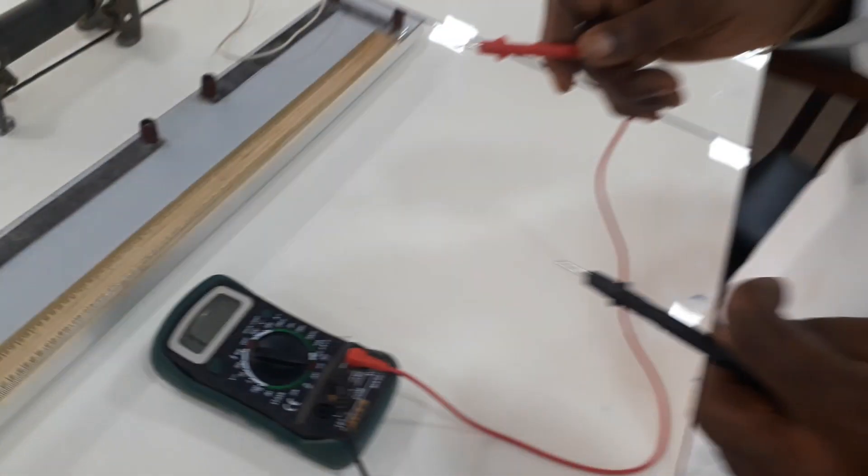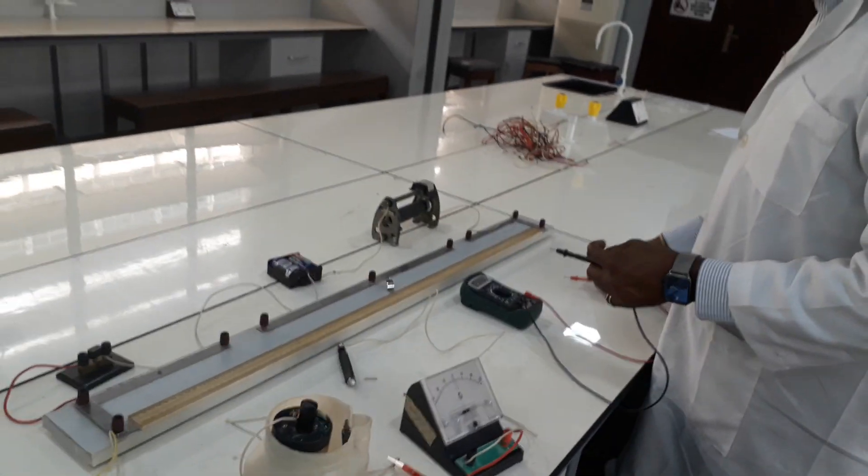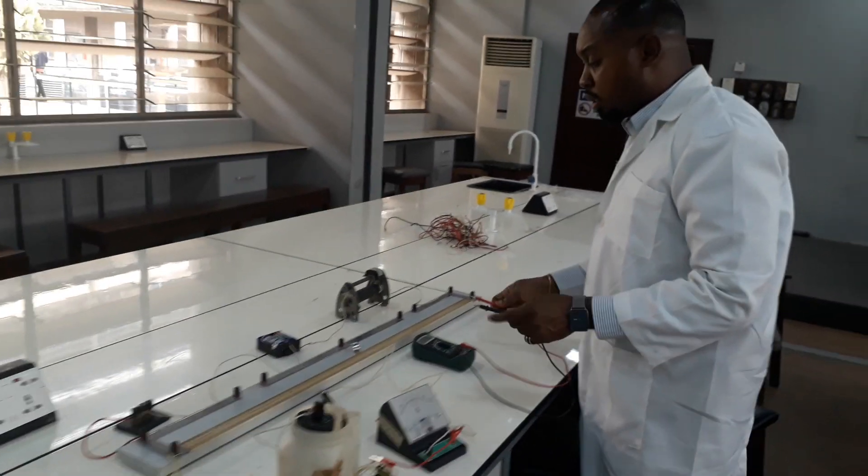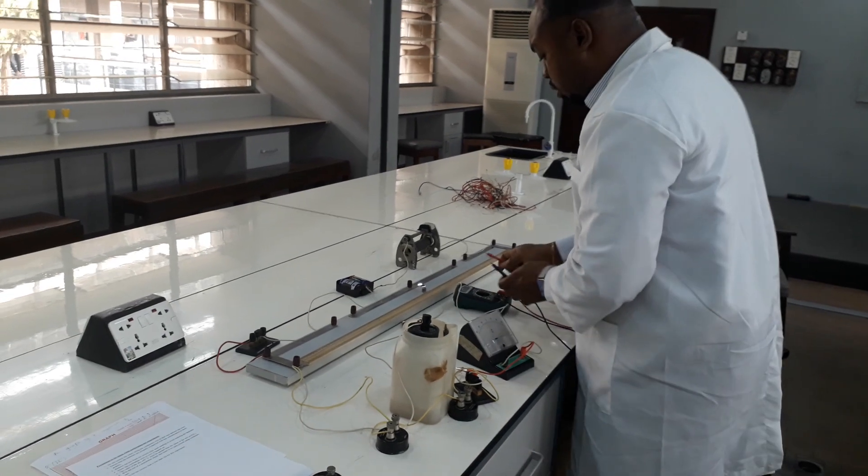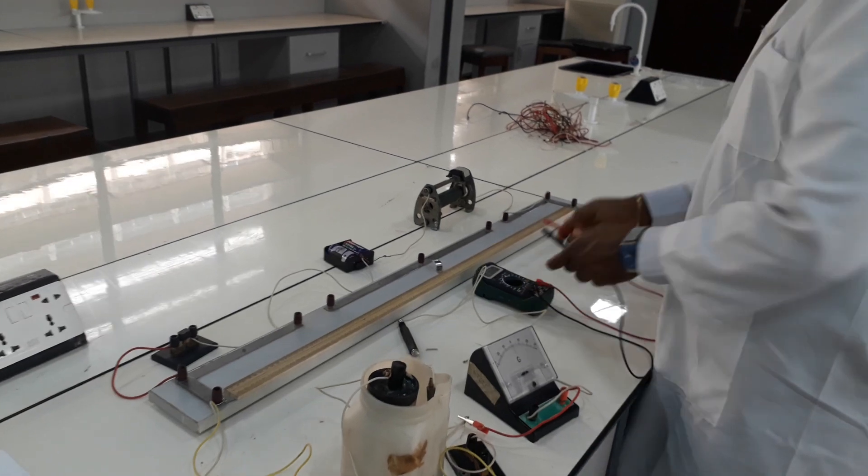Again, it's also important that E1, which is the dry cell, is higher than the E2, which is my Leclanche cell. I have to also measure the value of my E1.